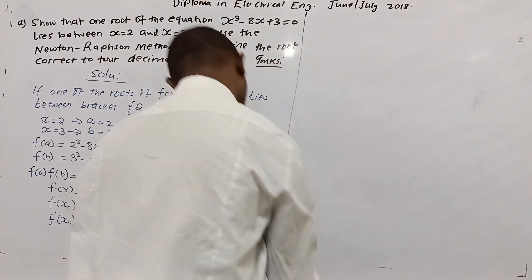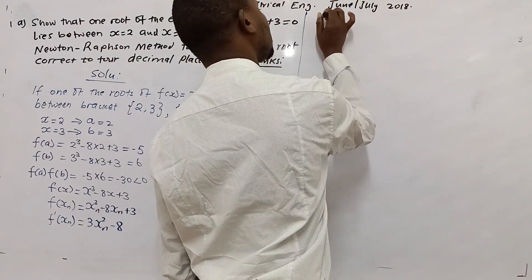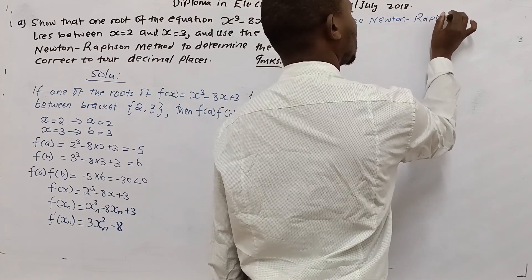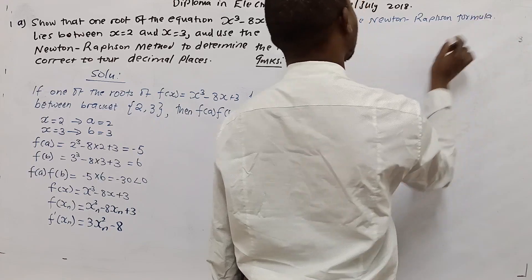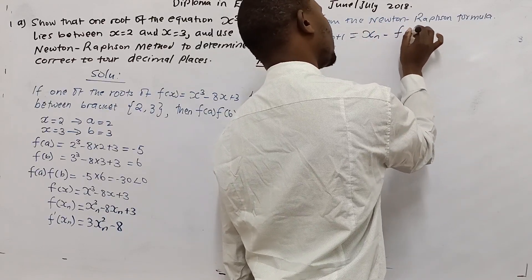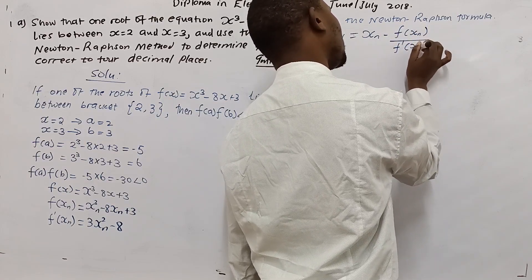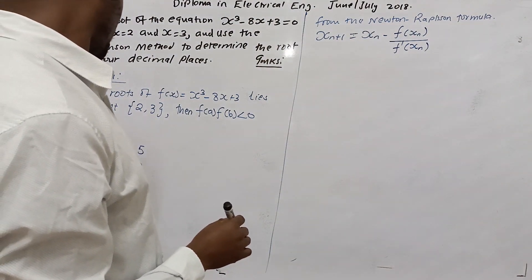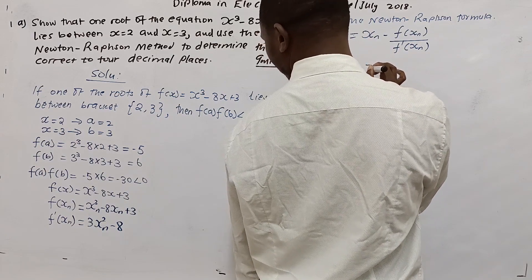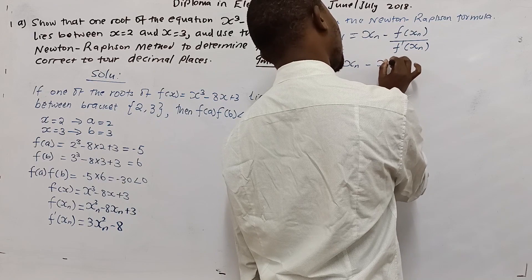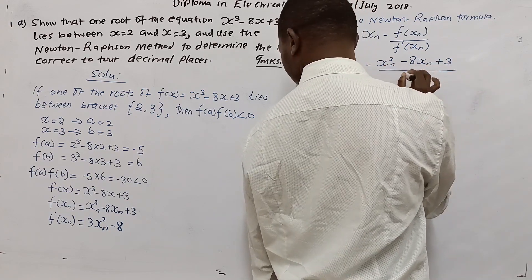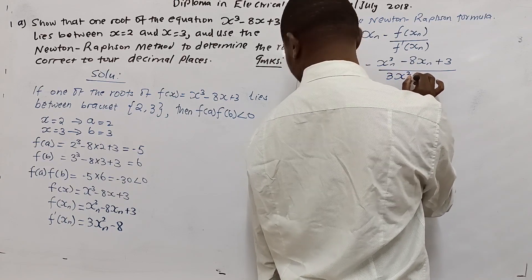From the Newton-Raphson formula, a better approximation to the root of f(x) = 0 is given by the previous approximation minus f of the previous approximation divided by f' of the previous approximation. So x_{n+1} = xₙ - (xₙ³ - 8xₙ + 3) / (3xₙ² - 8).